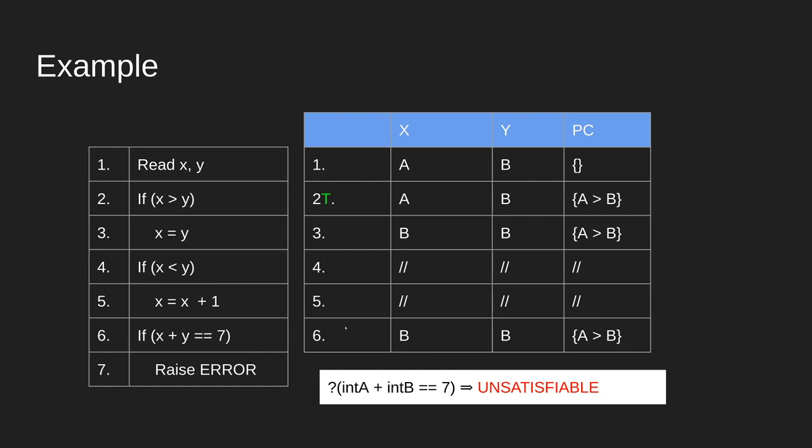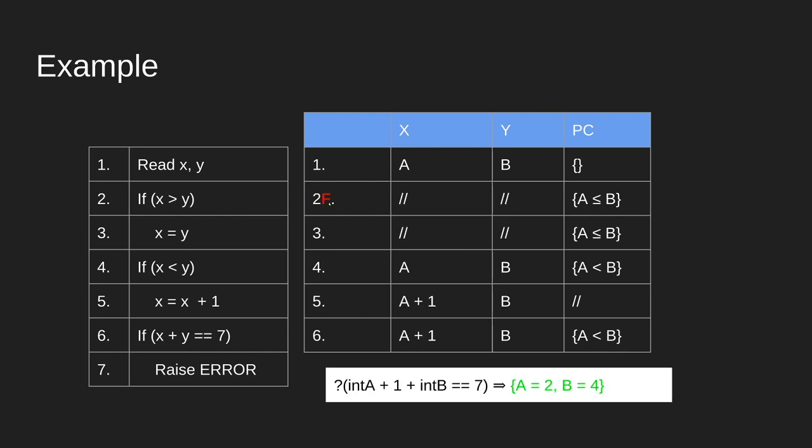So we will begin by returning to this assumption, now holding it as false, repeating similarly, setting x equal to a plus one instead, according to the new flow of the program. And passing it to the constraint, we see that this is satisfiable with the conditions that a is equal to 2, b is equal to 4.